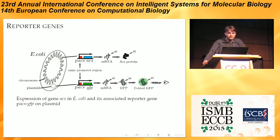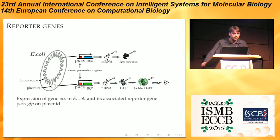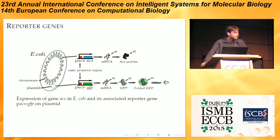Another way to get these quantities — an indirect way — is to use reporter genes. The idea of fluorescent reporter genes is that you construct a synthetic gene, here ACS-GFP, and this gene has the same promoter region as ACS, so it will have the same promoter activity, but instead of coding for the ACS protein, it will code for a fluorescent protein which we can very easily observe.